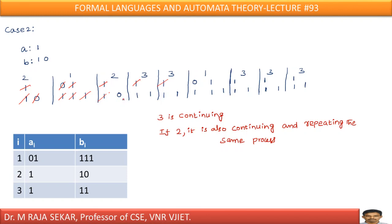I need a domino whose numerator starts with 0, so I take domino 1 again: numerator 01, denominator 111. The 0 and 0 cancel, then 1 and 1 cancel. Now I have six 1s in the denominator. Taking domino 2 or 3 again continues the same pattern indefinitely. Even if I keep writing different possible sequences, I will not get an identical string in numerator and denominator. Therefore, case 2 does not yield any finite sequence of dominoes leading to identical numerator and denominator strings.